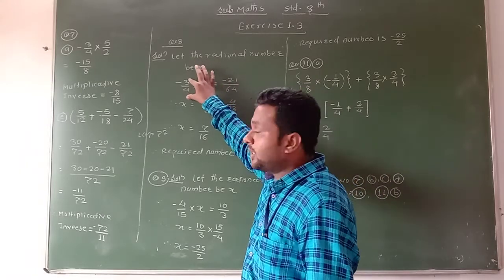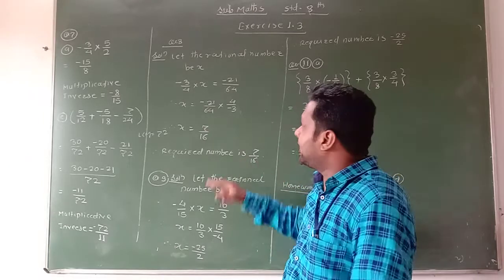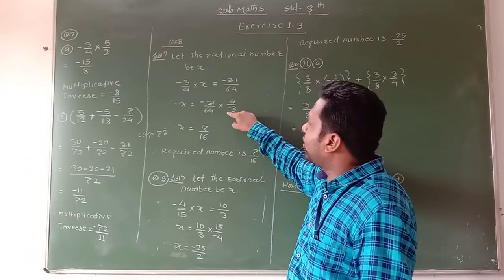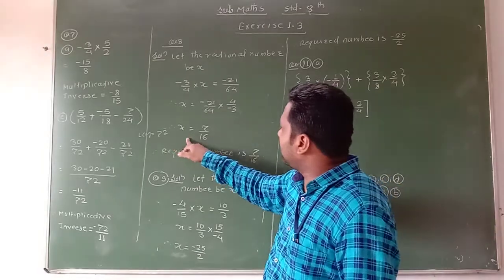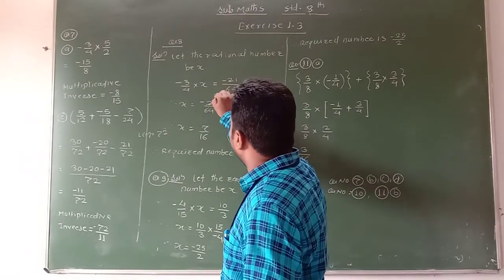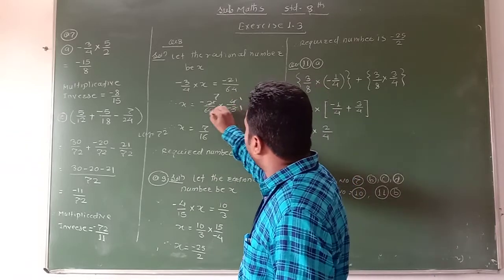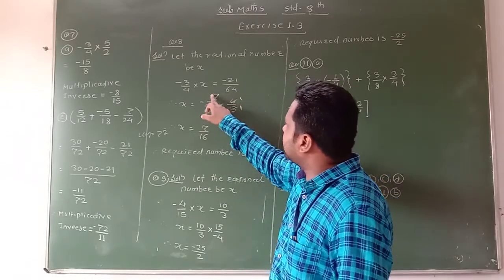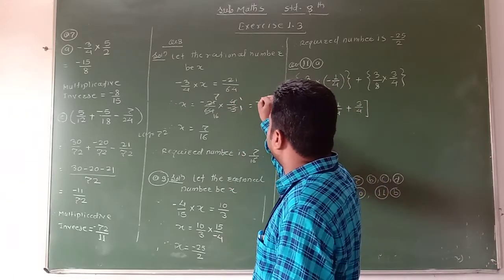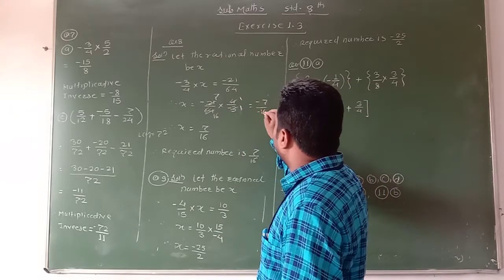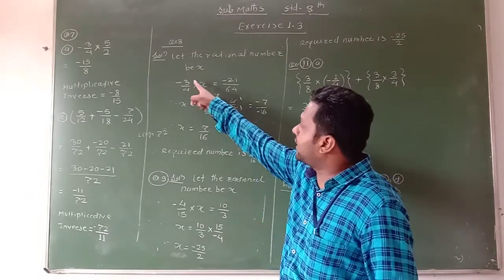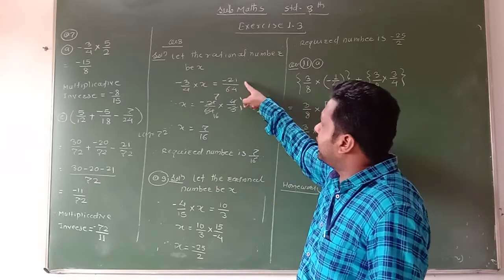We transfer minus 3 upon 4, which is in multiplication with x, to the other side — it comes in division. Therefore, minus 3 upon 4 in multiplication becomes 4 upon minus 3 — its reciprocal. Therefore, x equals minus 21 upon 64 multiplied by 4 upon minus 3. Simplifying: 3 cancels giving 7, and 4 cancels with 64 giving 16. What is remaining in the numerator is minus 7 into 1, that is minus 7, and denominator 16 into minus 1, that is minus 16. Therefore, x is equal to 7 upon 16. This is the required number by which we multiply minus 3 upon 4 to get minus 21 upon 64.